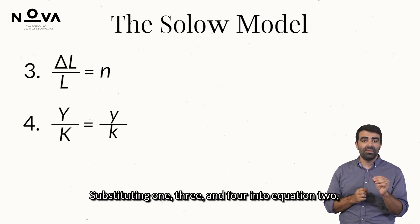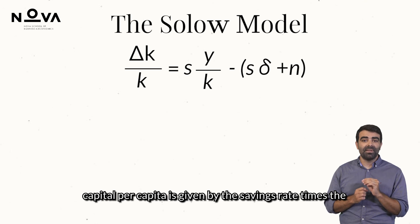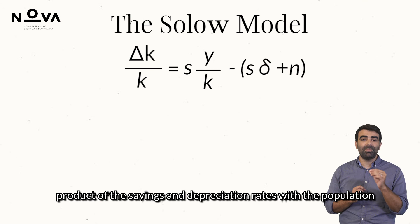Substituting 1, 3 and 4 into equation 2, we finally get the Solow model equation, where the growth rate of capital per capita is given by the savings rate times the average product minus a second term given by the sum of the product of the savings and depreciation rates with the population growth rate.